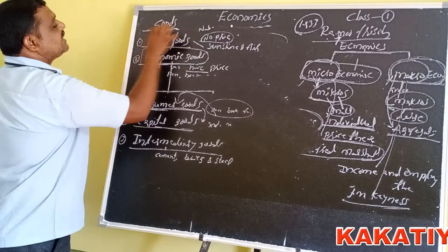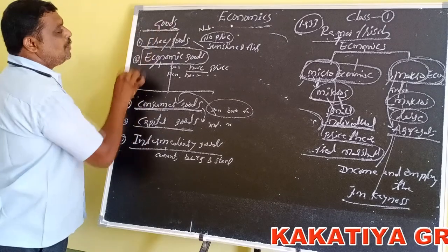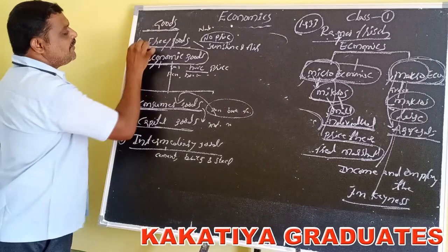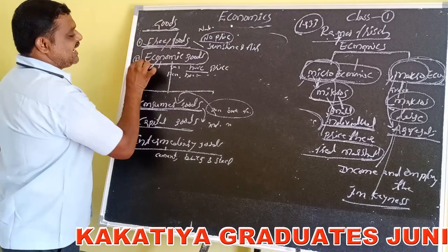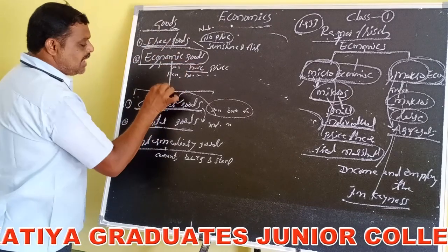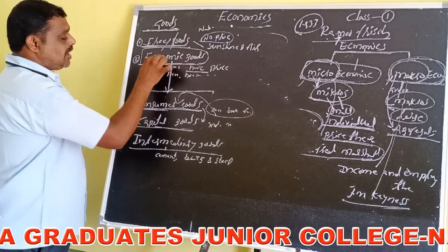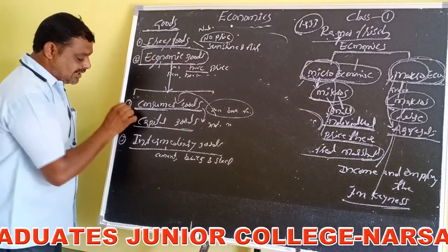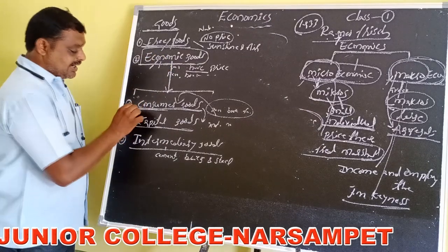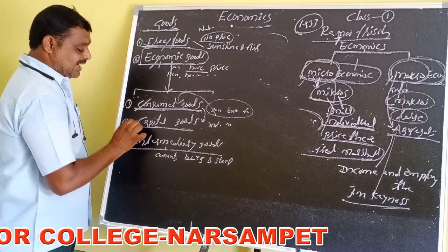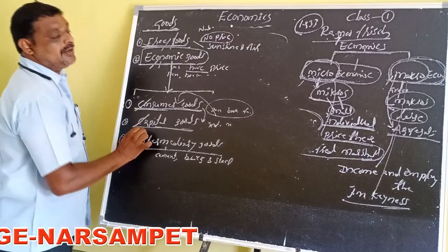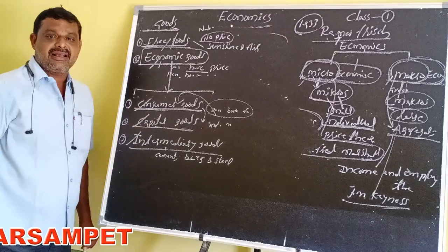So to summarize: goods are of two types — free goods and economic goods. Economic goods are of three types: consumer goods, capital goods, and intermediary goods. Thank you.